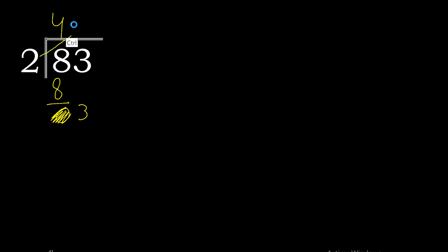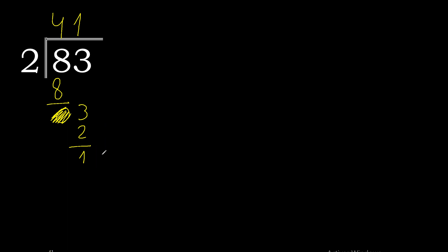Bring down the 3. 2 multiplied by 2 is 4 — too big. 2 multiplied by 1 is 2. 3 minus 2 is 1. There is no number that goes down, so we complete with 0 and a decimal point.